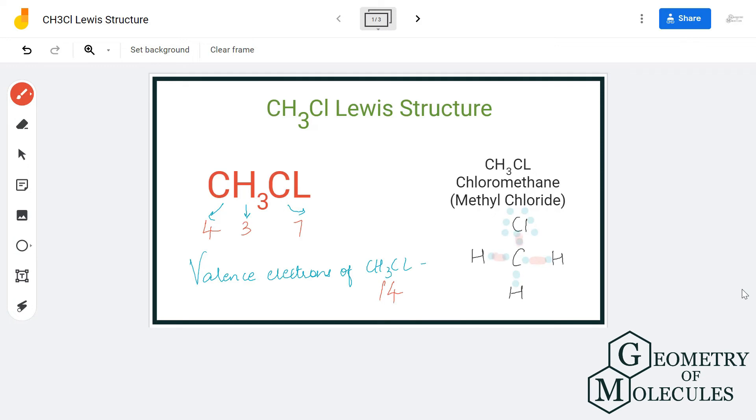Now let's see if the octets of all the atoms are fulfilled. Hydrogen has two valence electrons, chlorine has eight valence electrons, and even carbon has eight valence electrons as it has shared four of its electrons with three hydrogen atoms and one chlorine atom.